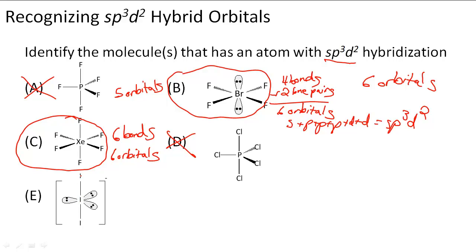Here we have 1, 2, 3, 4, 5 — we have 5 again, like PF5, except there are 3 lone pairs and 2 bonds. That still gives us 5 orbitals. Remember, we're looking for 6 orbitals to have sp3d2 hybridization.